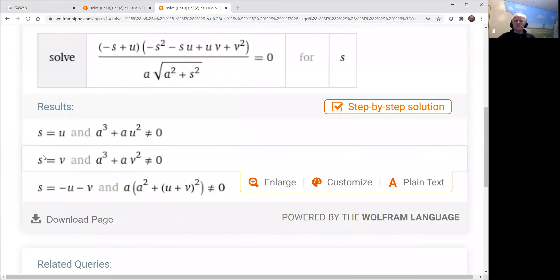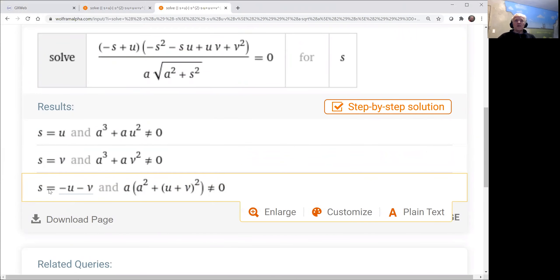It's got s equals u as a solution. It's got s equals v as a solution. Well, that's fairly clear that that would be a solution. And now we have s equals minus u minus v. And so there's our third solution.